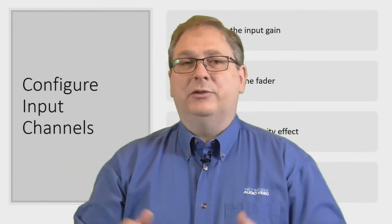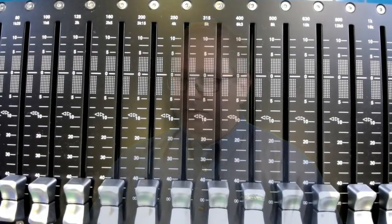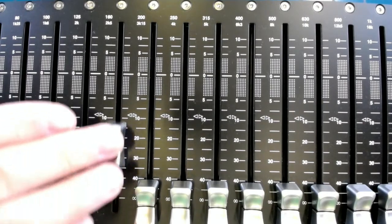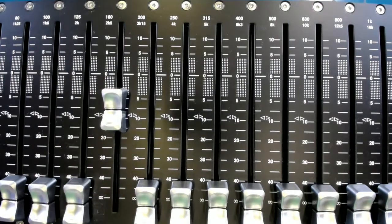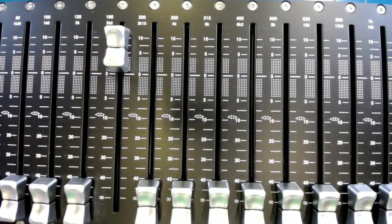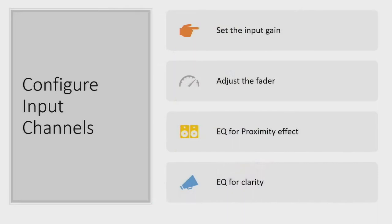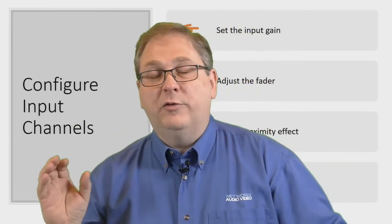I want to show you a certain relationship that is sometimes a little baffling for volunteers, and that is the fader. A lot of times we've been setting faders in such a way where we think channels should be at different varying levels, and we've always thought that was the proper way. But that's not quite true, because there's a certain relationship between the gain before the fader, and the fader itself. It's quite important to set that input gain.